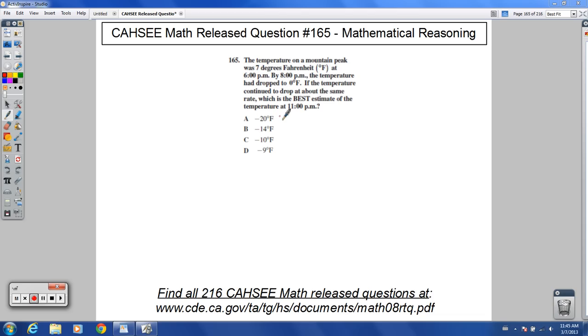So from 6 p.m. to 8 p.m., that's 2 hours. And from 7 degrees to 0 degrees, that's a drop or a negative temperature, that's a drop of 7 degrees Fahrenheit.